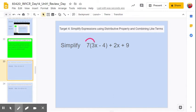So we're going to go 7 times 3x is 21x. And then we're going to go 7 times negative 4. So that's going to be negative 28. So I'm going to say plus negative 28.